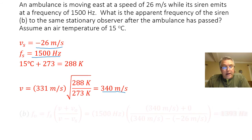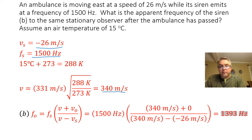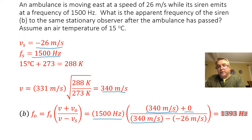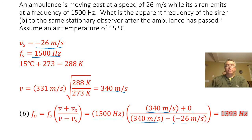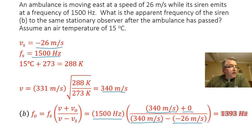When I plug all of this into my Doppler equation: the frequency of the siren is 1500 hertz, the sound wave is still moving at 340 meters per second, my observer is still stationary so their velocity is zero, and the ambulance is moving at 26 meters per second away from the observer so their velocity is negative. When I do out that math, I get an observed frequency of 1393 hertz.